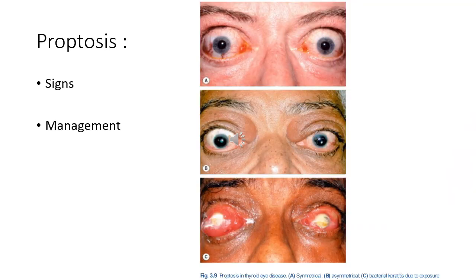Proptosis in thyroid eye disease is axial, may be unilateral or bilateral, symmetrical or asymmetrical, and is frequently permanent. Severe proptosis may compromise eyelid closure, resulting in exposure keratopathy, corneal dryness, and infection. Management is controversial. Treatment options include systemic steroids — useful in rapidly progressive and painful proptosis during the congestive phase — and radiotherapy, which may be used in addition to steroids or when steroids are contraindicated or ineffective.